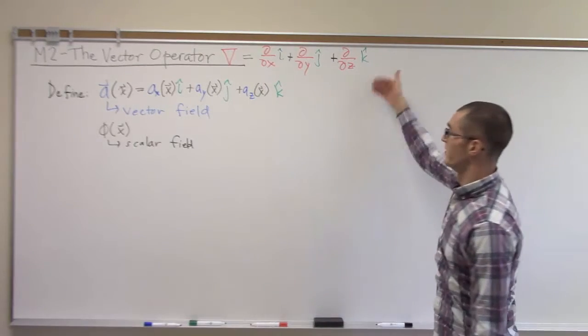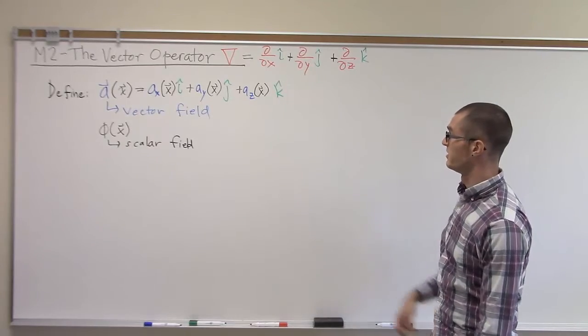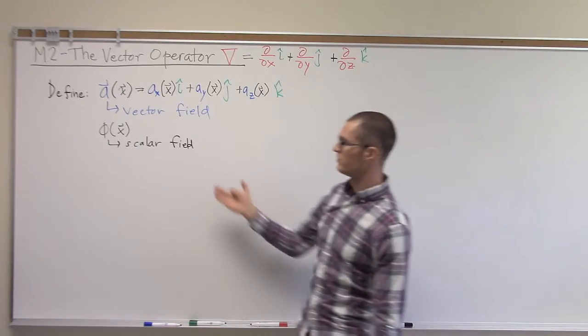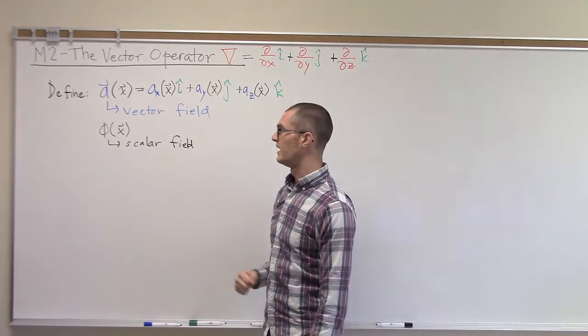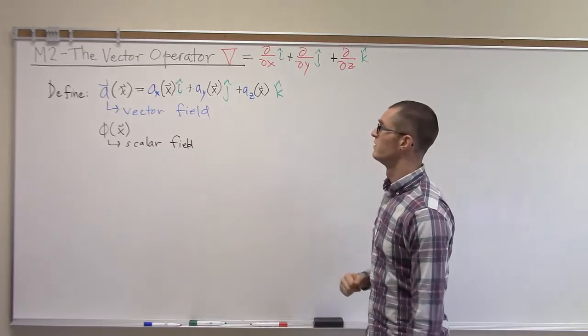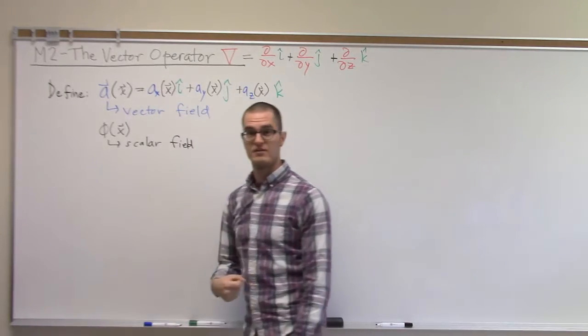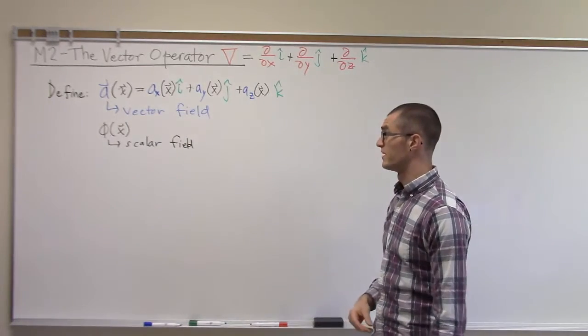We'll just recall our definition of the vector operator. It's this vector of partial derivatives, and for our purposes here we'll define a vector field a which is a function of the three coordinates x, y, and z, and also a scalar field phi which is a function of x, y, and z.